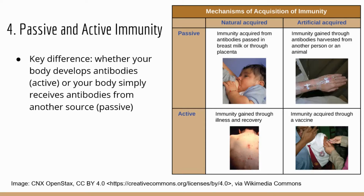Now let's look at the differences between passive and active immunity. These terms can be very confusing if you're given a specific example and asked to differentiate whether it's passive or active immunity. The key is to remember whether your body makes the antibodies or receives them from another source. If your body makes its own antibodies, that's active immunity — you are doing the work. If your body simply receives antibodies from a different source, that's passive immunity.